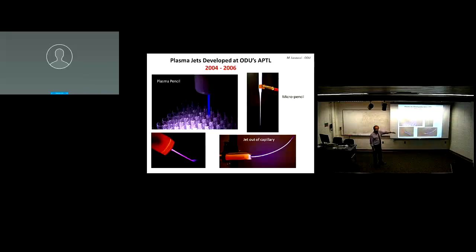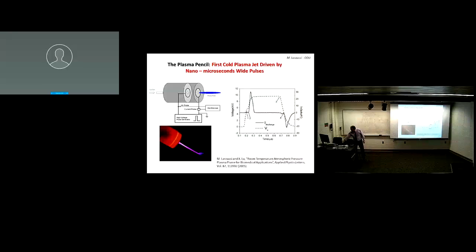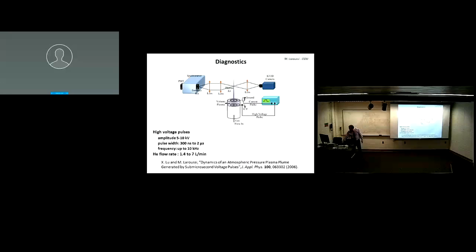Here are pictures of some devices we developed between 2004 and 2006: the plasma pencil, micro pencils, and a jet where plasma follows a thin capillary tube and comes out at the end. These are plasmas you can touch with your bare hands without being burned. The plasma pencil design shows the typical pulse pattern — first discharge and a second discharge at the falling edge. My first instinct when I saw it was to look at it with a fast camera to see how it forms — how the plasma goes from inside to outside.